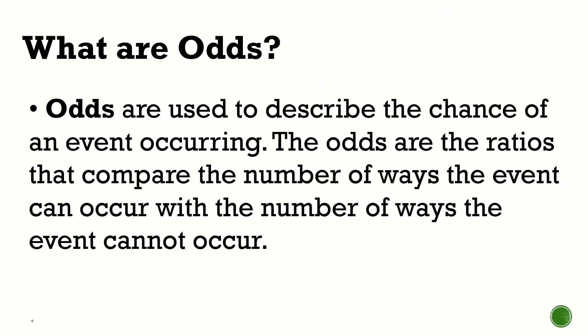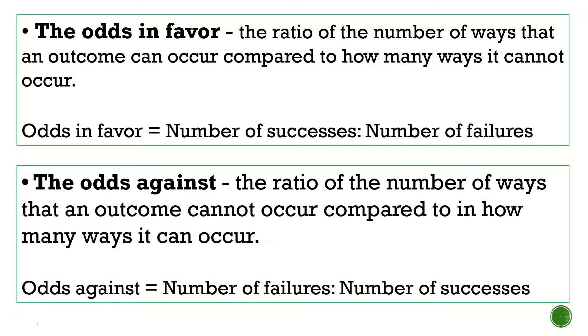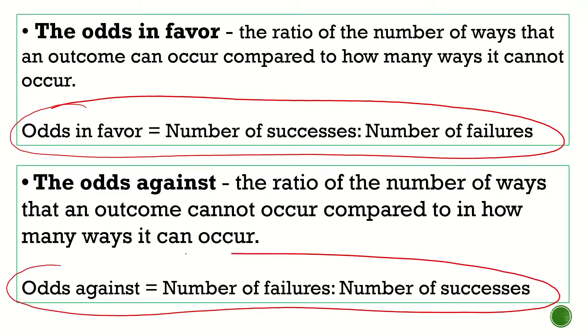Let's define first what do we mean by odds. Odds are used to describe the chance of an event occurring. The odds are the ratios that compare the number of ways the event can occur with the number of ways that event cannot occur. Now, there are two different kinds of problem that you will see. Odds in favor and odds against. So if it's odds in favor, the answer or the equation to that one will be the number of successes is to the number of failures. Odds against, on the other hand, is the opposite of that. Number of failures is to the number of successes. Let me give you five examples.